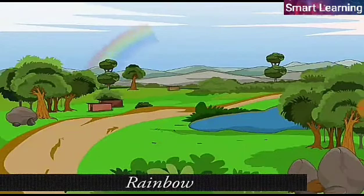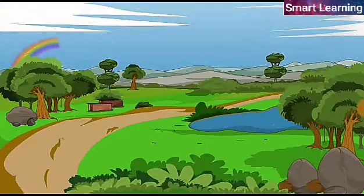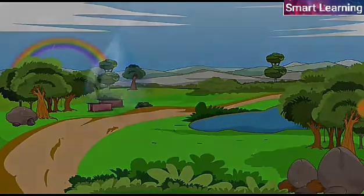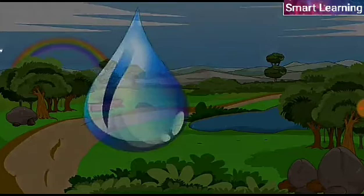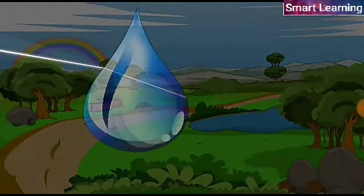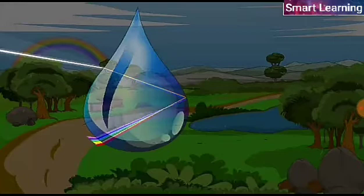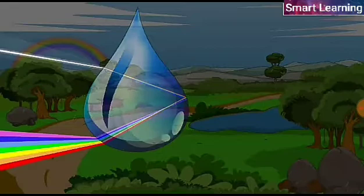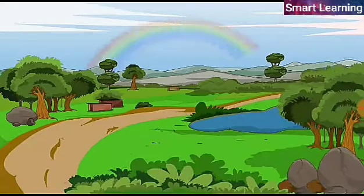A rainbow is a natural spectrum appearing in the sky after a rain shower. It is caused by dispersion of sunlight by tiny water droplets present in the atmosphere. The water droplets act as small prisms. They refract and disperse the incident sunlight, and then reflect it internally before refracting it again on coming out of the raindrop. In this way, different colors reach the observer's eye. It should also be observed that a rainbow is always formed in the direction opposite to that of the sun.